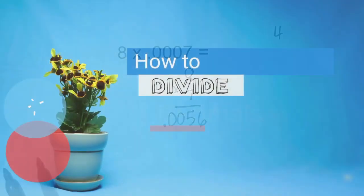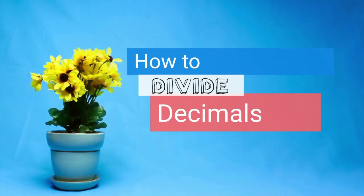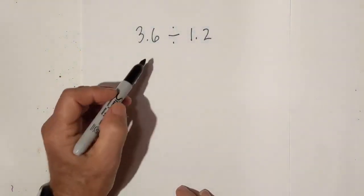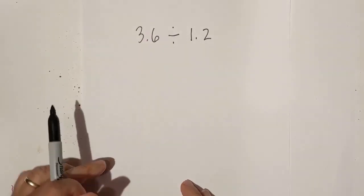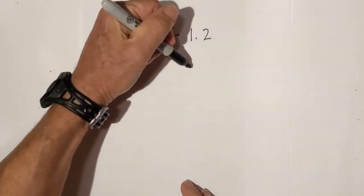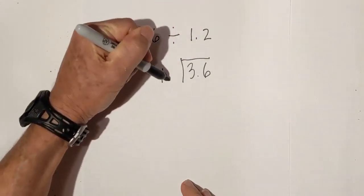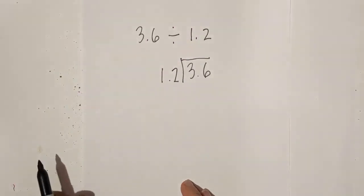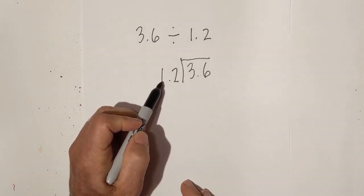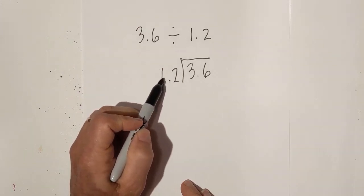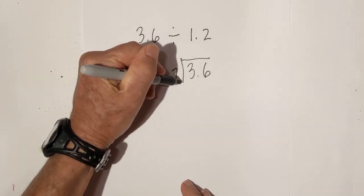Now let's begin dividing. We have 3 and 6 tenths divided by 1 and 2 tenths. I'll rewrite it in long division format. I ask myself: is the outside number a whole number? No — so I can move the decimal place one to the right, and I'll do the same on the inside.